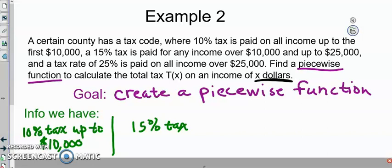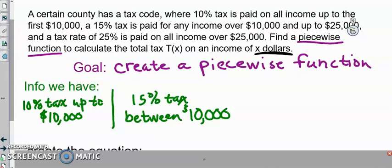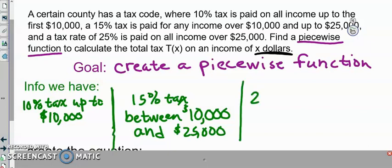So between $10,000 and $25,000. We have another one, our third part. It says 25% tax when it comes to getting over $25,000.